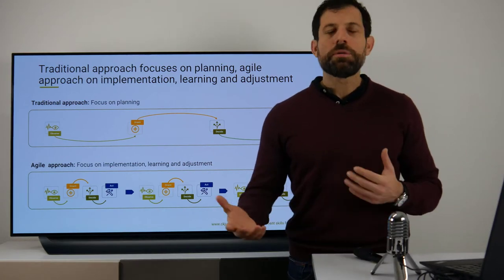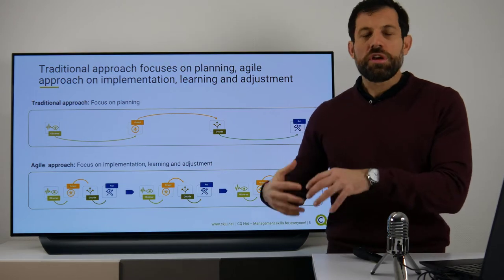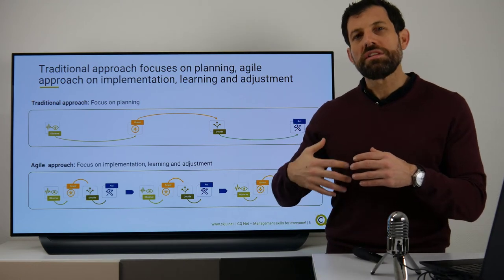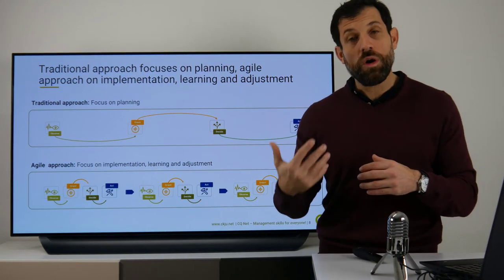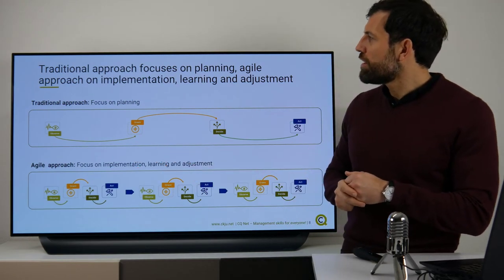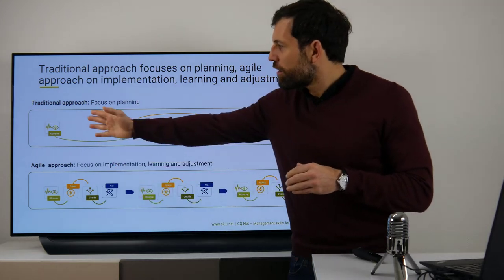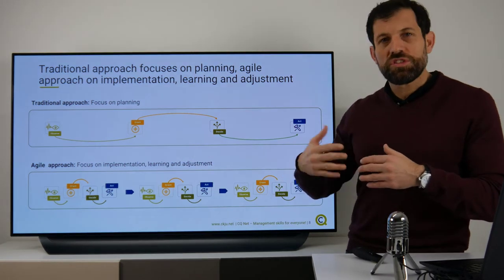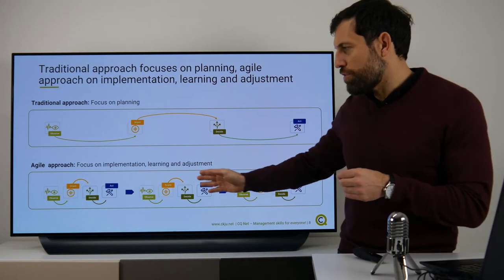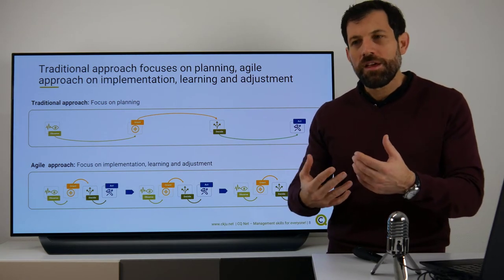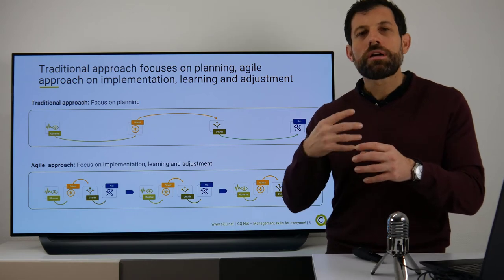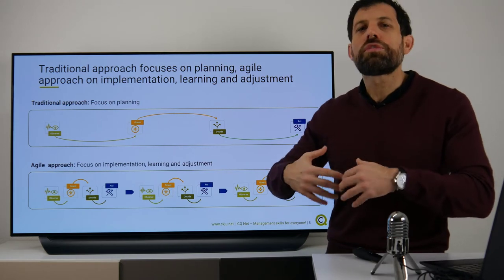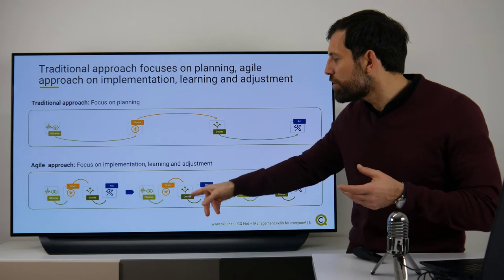The contrary approach to Agility is the traditional one. The traditional approach is also close to the OODA loop, but it only goes through it once or maybe twice. The traditional approach is: Observe, Orient, create a plan, then decide what to do and finally act. An Agile approach is much more focused on adjusting, on learning, on observing how things changed, coming up with a new plan and then implementing it. This is why in an Agile approach you usually go through iterations and cycles which allow you to continuously adjust.